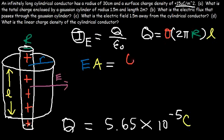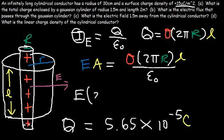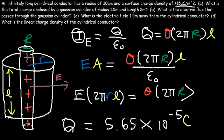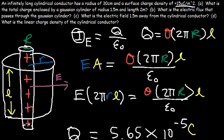The electric flux is the electric field times the area of the Gaussian cylinder, which is 2π times little r times L. Setting E·(2πrL) = sigma·(2πRL)/epsilon, we can cancel L and 2π from both sides, then divide both sides by r.